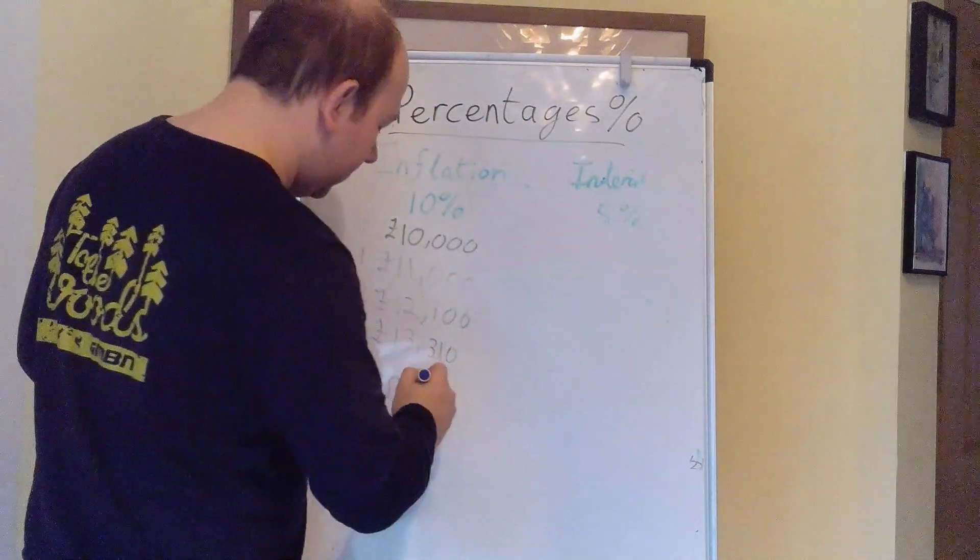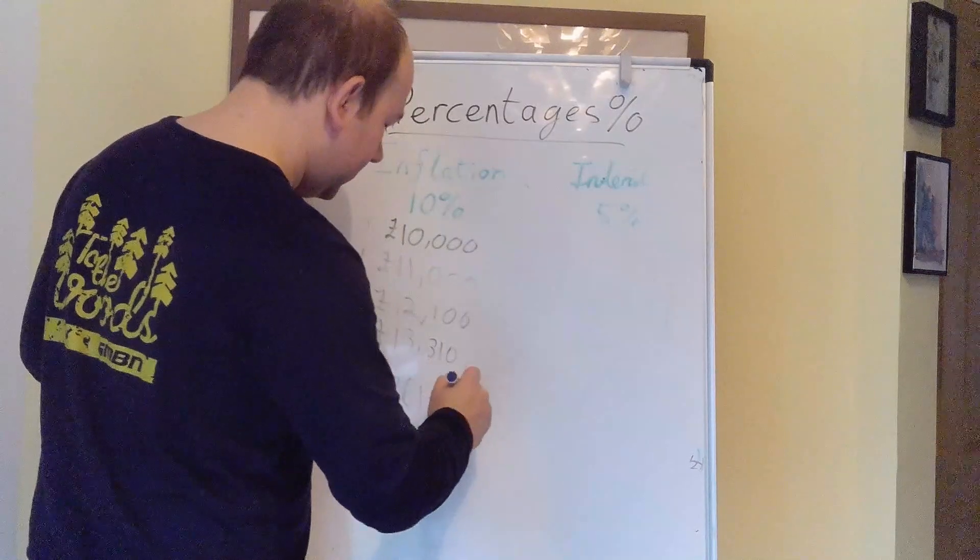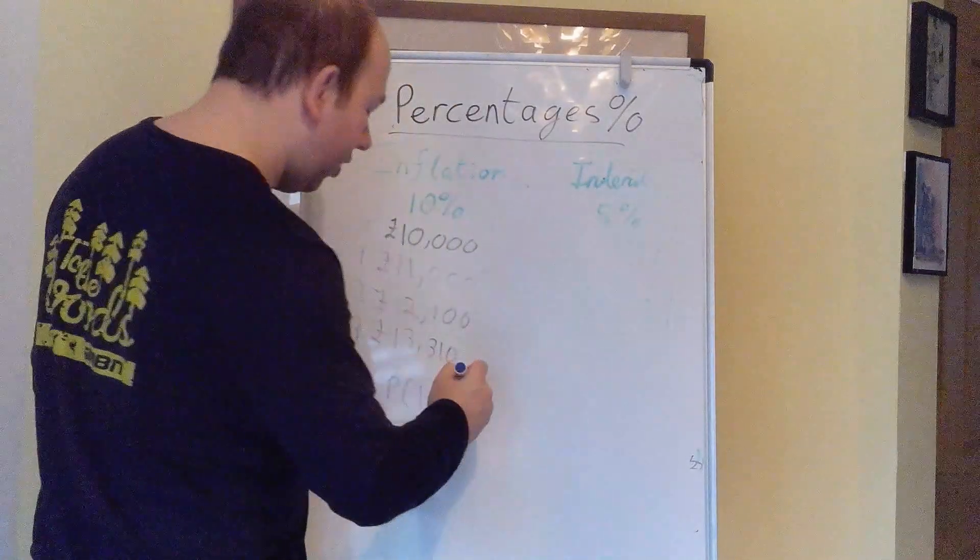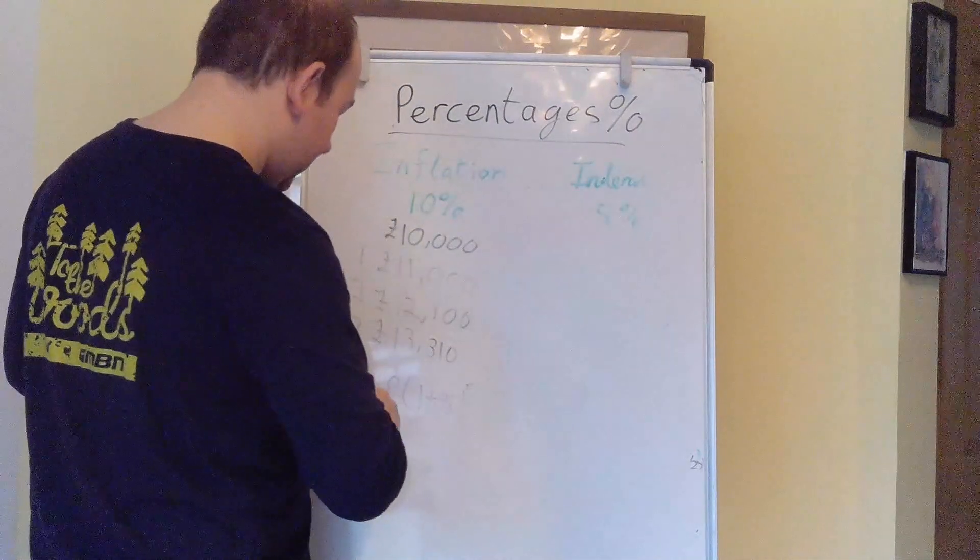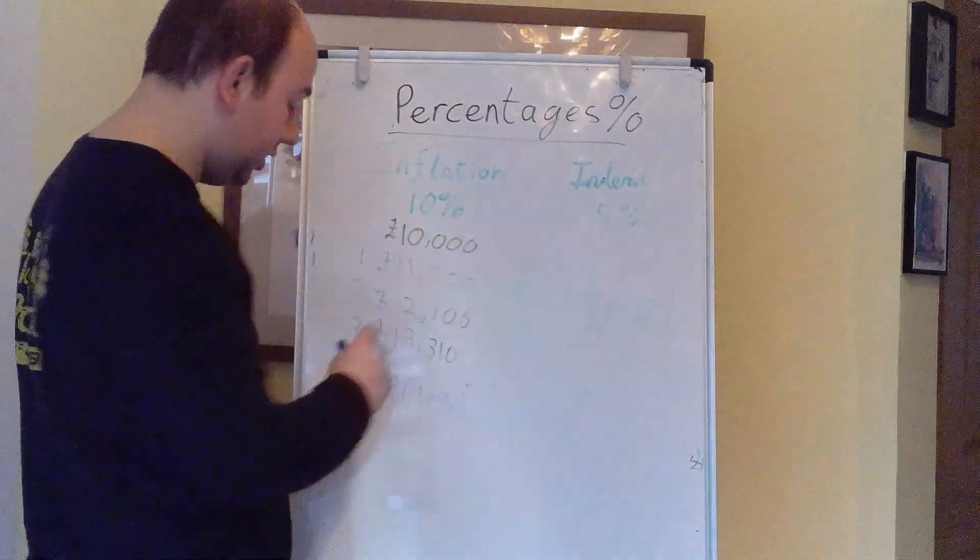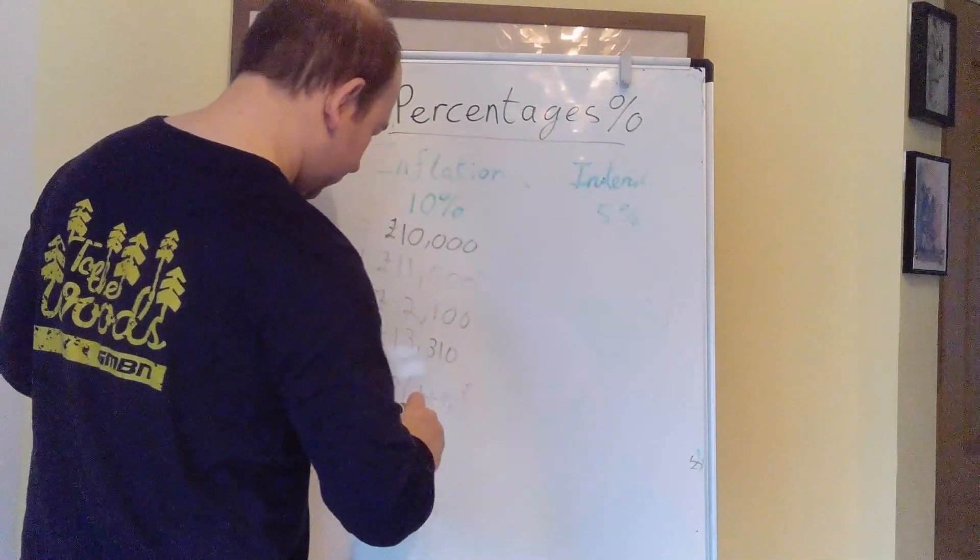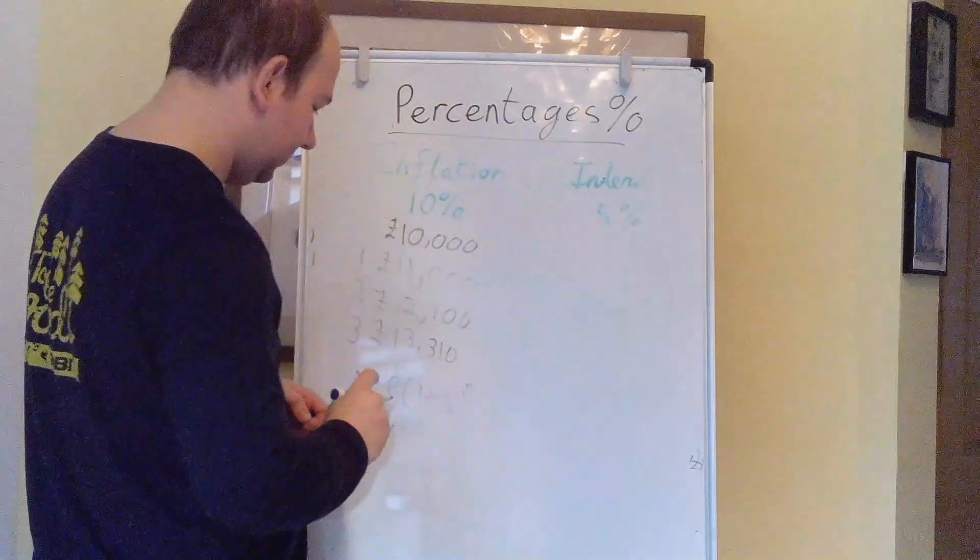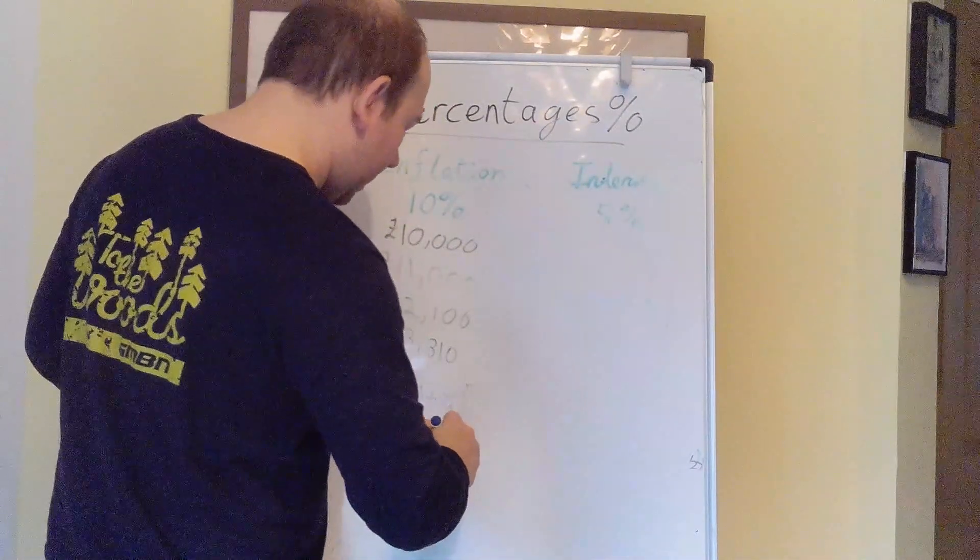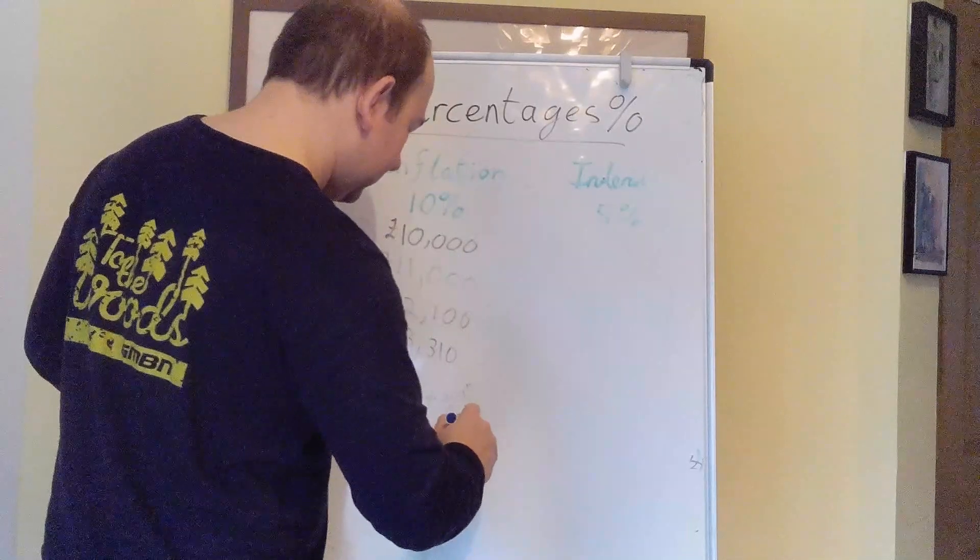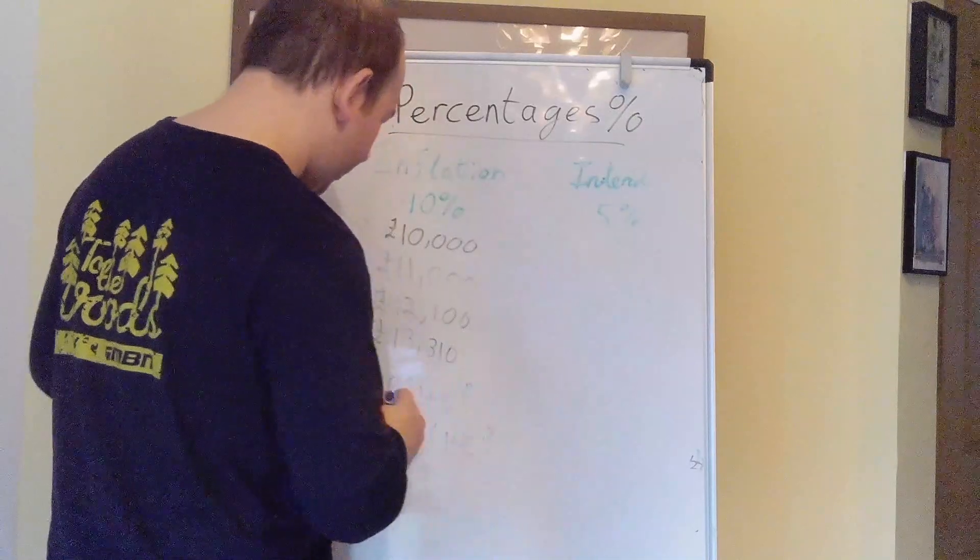And we're at 1 plus the percentage times the number of years. So in this case, A is equal to 10,000 multiplied by 1 plus 10% to the power 3.